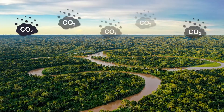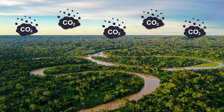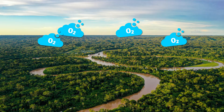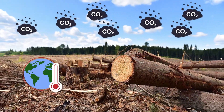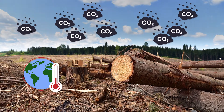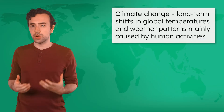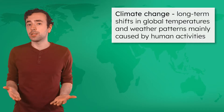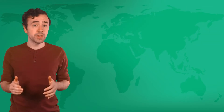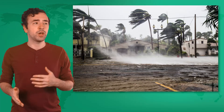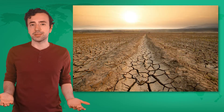Remember how burning oil releases harmful carbon dioxide into the atmosphere? Vegetation in the Amazon absorbs large amounts of that carbon dioxide and releases a lot of oxygen in return, which we all need to survive. As deforestation depletes these forests, less carbon dioxide is absorbed, leading to higher global temperatures and accelerating climate change. Climate change refers to the long-term shifts in global temperatures and weather patterns mainly caused by human activities. It can lead to severe consequences like rising sea levels, disrupted ecosystems, and extreme weather events like hurricanes, heat waves, and droughts.